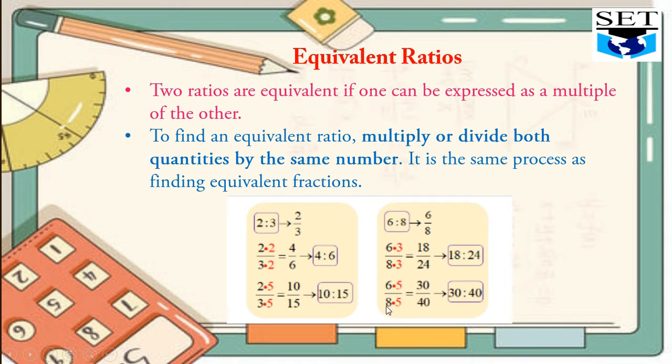Similarly, to find the second equivalent ratio, we have multiplied 6/8 by 5. 6 times 5 is 30, 8 times 5 is 40. So 30 to 40 is the second equivalent ratio of 6 to 8.